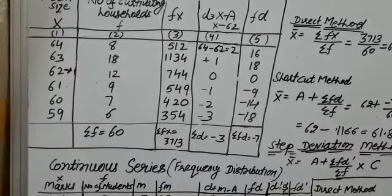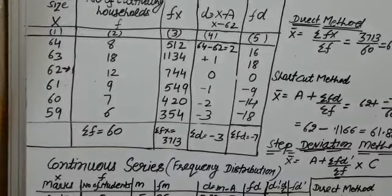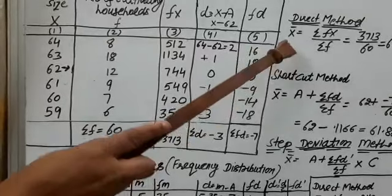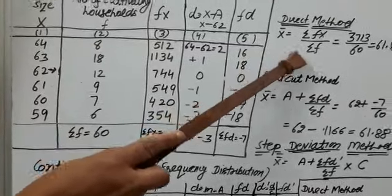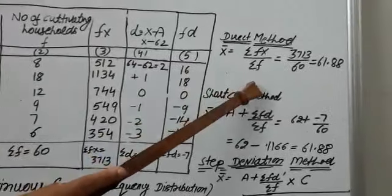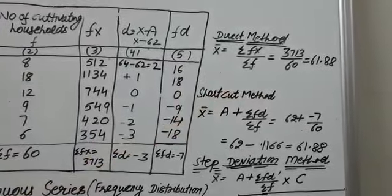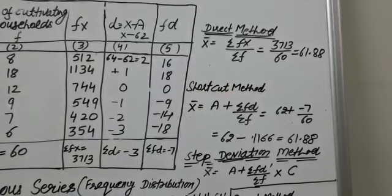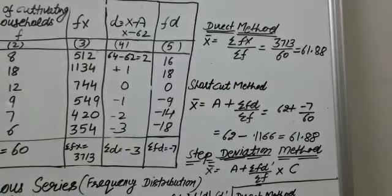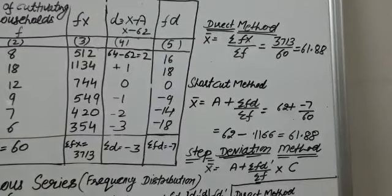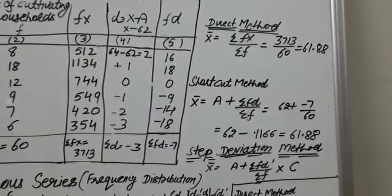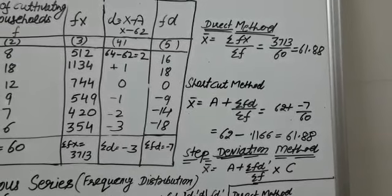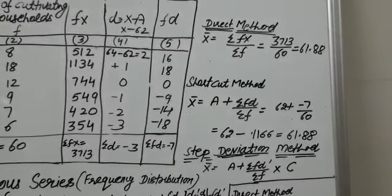By direct method, the mean is equal to sigma fx upon sigma f, that is 3713 divided by 60. So the average is equal to 61.88.